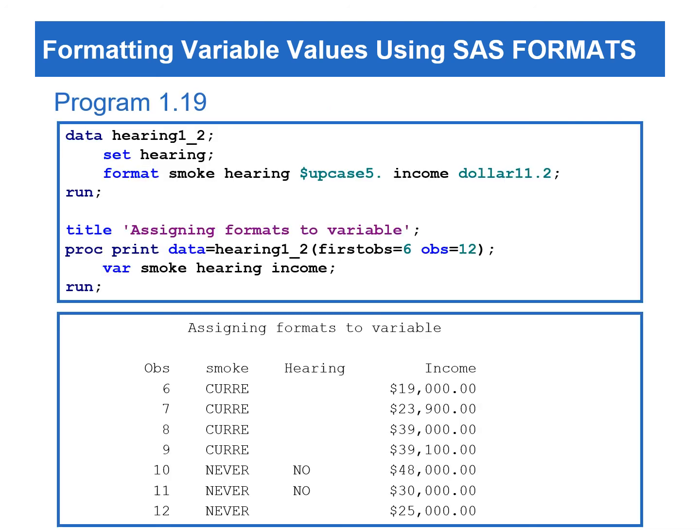Program 1.19 associates the smoke and hearing variables with the UPCASE5 format, and the income variable with the DOLLAR11.2 format. Since the width of the UPCASE format is not long enough, only the first five characters in the smoke variable are printed in the output.